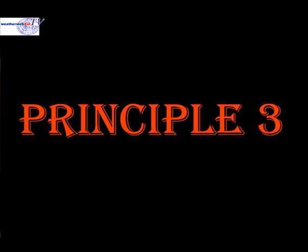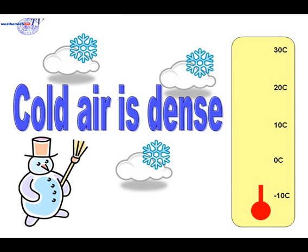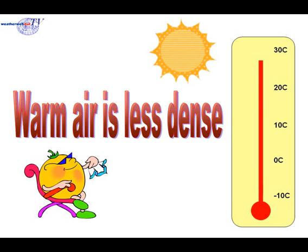Principle 3. And this relates to temperature. Cold air is dense — you can think of it as being quite heavy, although technically this isn't correct; it's best just to stick with these phrases. But cold air is dense. Warm air is less dense. So if you put warm air and cold air together, there's a tendency for the cold air to sink and the warm air to rise — a little like oil and water. Just remember: cold air is dense and warm air is less dense.